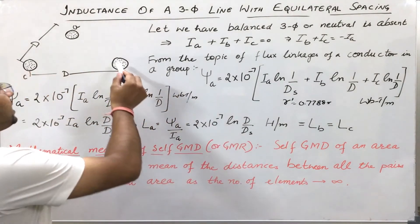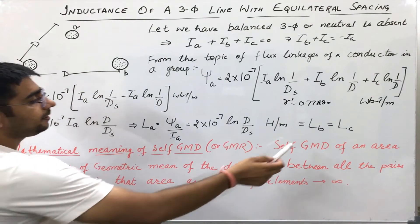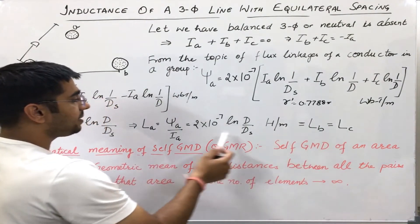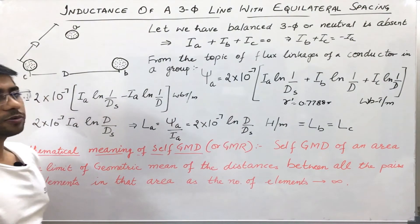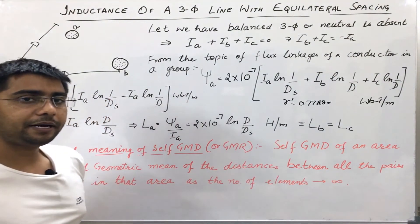Now, we know that the circuit is symmetric. So, the inductance of even phase B conductor or phase C conductor will simply be 2 times 10 to the power minus 7 natural log d by ds Henry per meter.